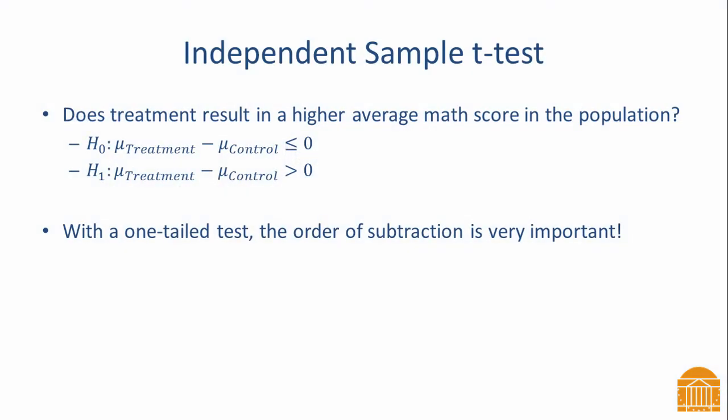In this part of the demonstration, I'm going to show you how to use R to conduct an independent samples t-test. The specific research question I am addressing is: does treatment result in a higher average mass score in the population? I can state this as an alternative hypothesis, which says that the treatment group mean is larger than the control group mean.